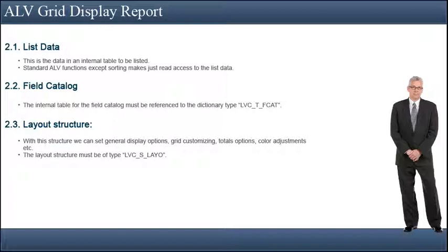The Field Catalog must comprise some technical and additional information about display options for each column to be displayed. There are three procedures to generate the Field Catalog: automatic generation, semi-automatic generation, and manual generation. The internal table for the Field Catalog must be referenced to the dictionary type LVC_T_FCAT.